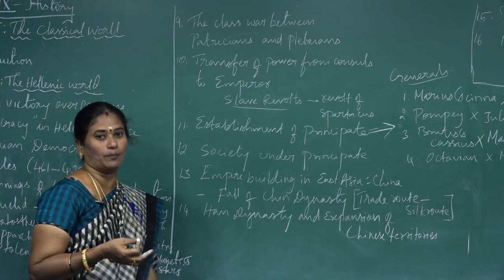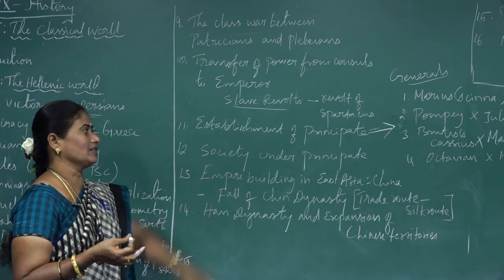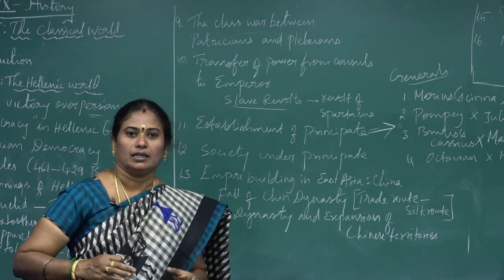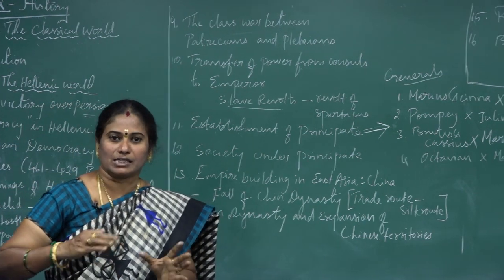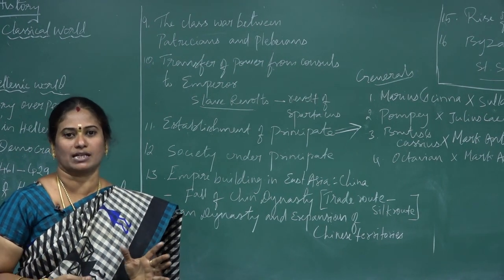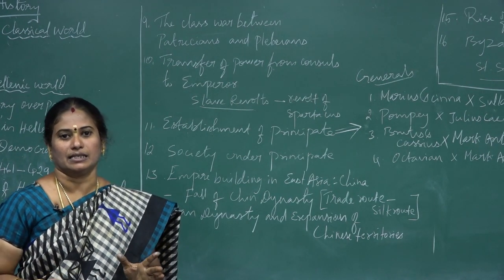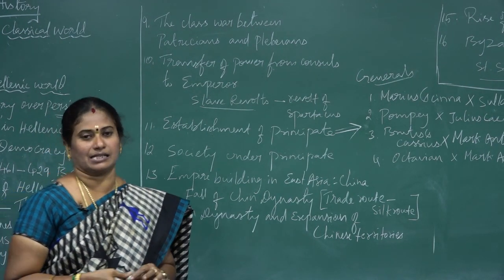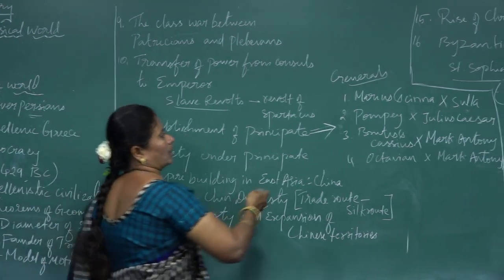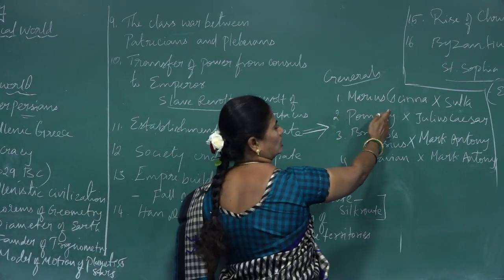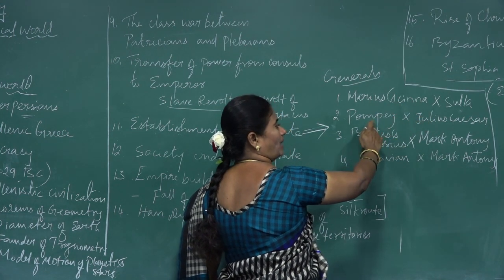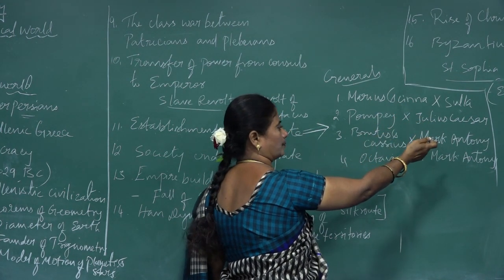The civil war over social issues ended by replacing the civil wars with conflicts between generals. The generals were: Marius and Cinna against Sulla; Pompey against Julius Caesar; Brutus and Cassius against Mark Antony; and again Octavian against Mark Antony.